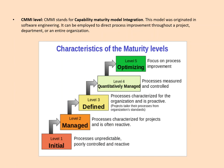CMMI stands for Capability Maturity Model Integration. This model originated in software engineering and can be employed to direct process improvement throughout a project, department, or entire organization. There are five levels. Level one is Initial — processes are unpredictable, poorly controlled, and reactive. Level two is Managed — some processes are characterized for the project and it is reactive. Level three is Defined — processes are characterized for the organization and it is proactive, with projects tailoring their processes from the organization's standard.